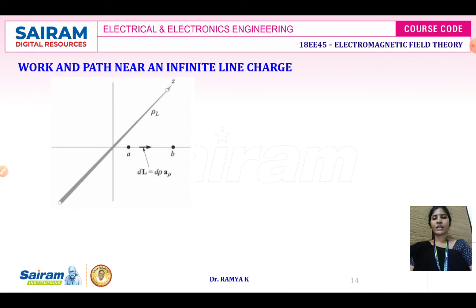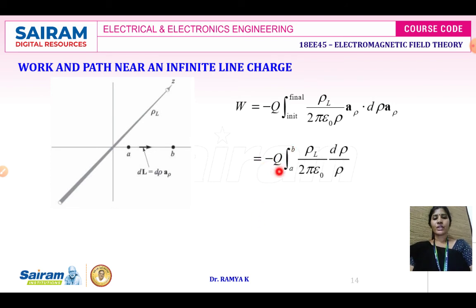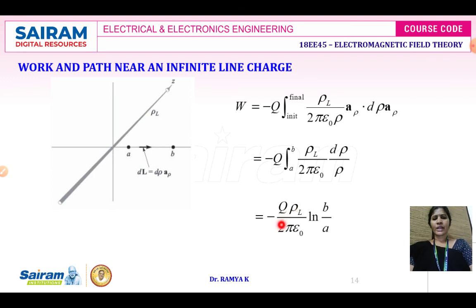Continuing the work and path near an infinite line charge: after simplification, W = -Q ∫[A to B] [ρL/(2πε)] · Dρ/ρ. After solving, we get W = Q·ρL/(2πε) · ln(B/A), or equivalently -Q·ρL/(2πε) · ln(B/A). This is the final result for work and path near an infinite line charge.